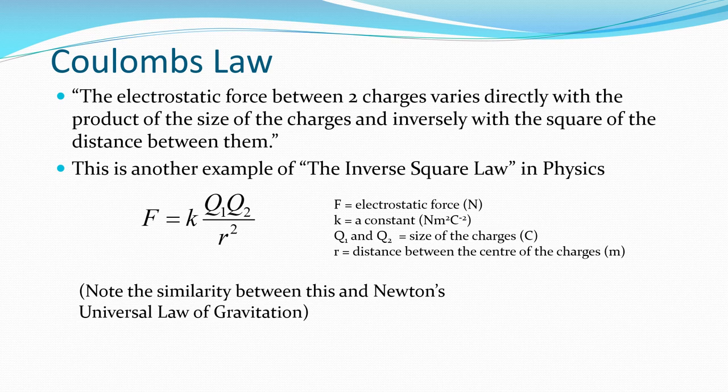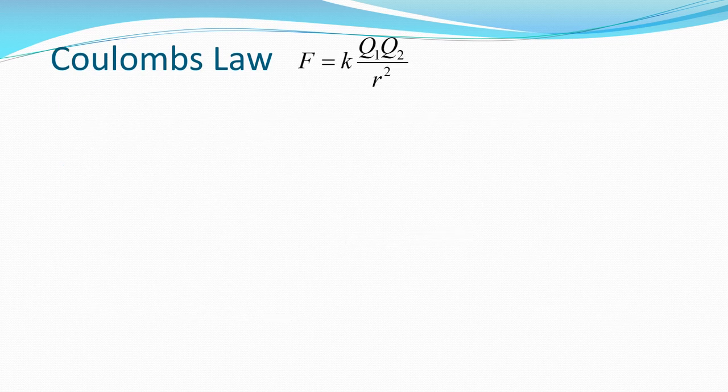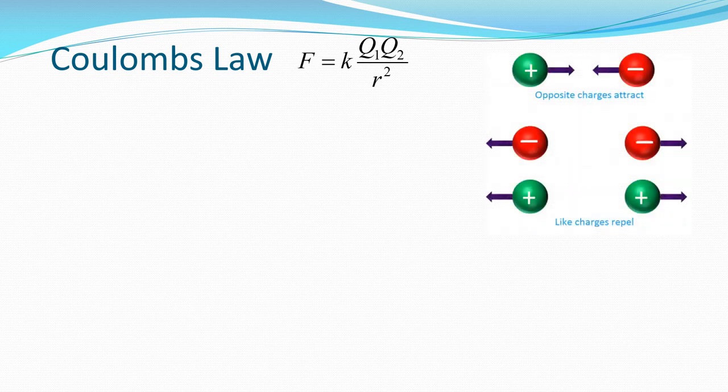Note the similarity between this and Newton's universal law of gravitation: F is equal to G M1 M2 over R squared, where G is the gravitational constant. So Coulomb's Law is F is equal to K multiplied by Q1 Q2 over R squared. We can see that opposite charges attract and like charges repel.